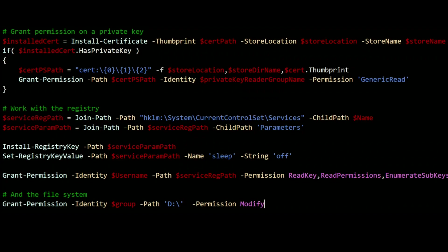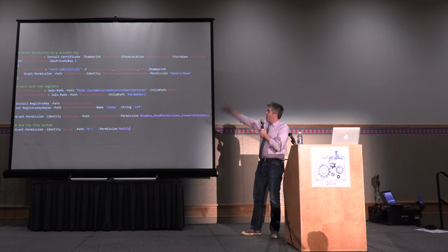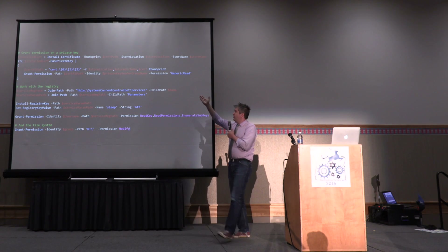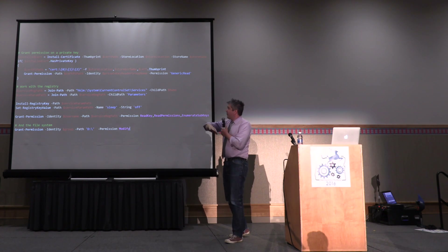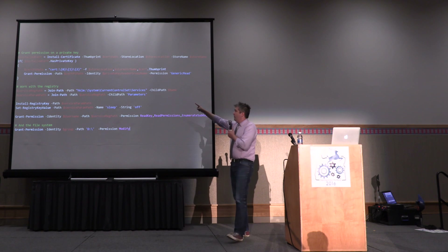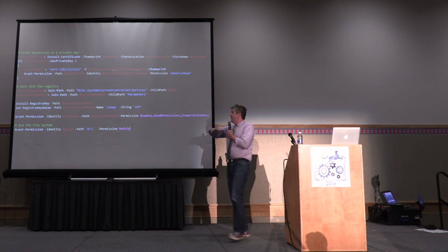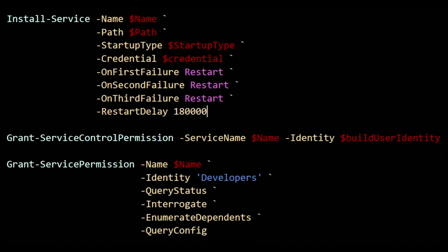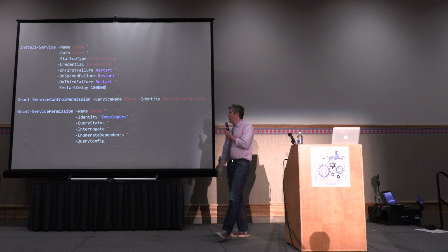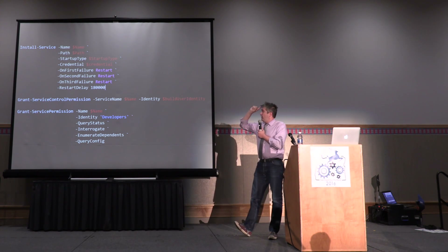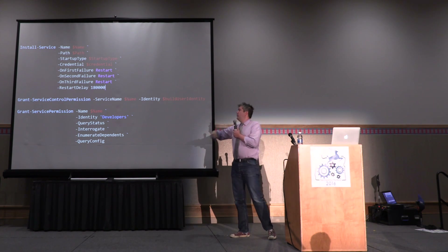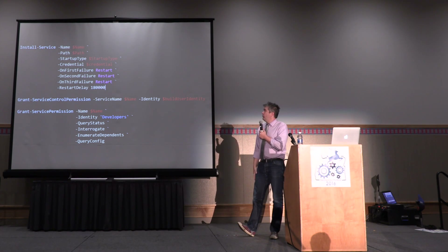So here's some Carbon code. It's great because it's all one line. Here we're installing a certificate, and we're granting permissions on the private key of that certificate. Without this function, you'd be creating registry keys and values on those registry keys. Installing services and setting advanced properties on those services is not easy. You can actually grant permissions to control services and set other permissions on services, which are also very difficult to do.